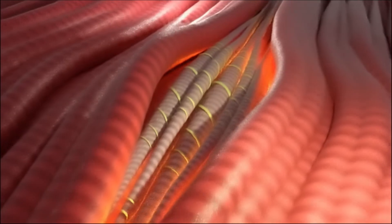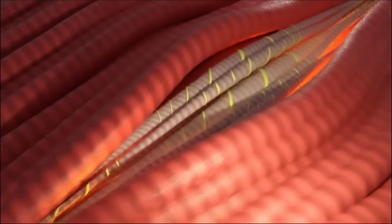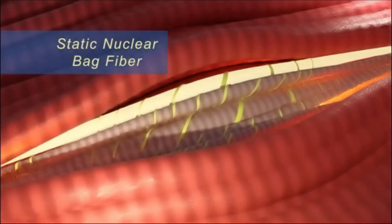Typical muscle spindles consist of three types of intrafusal muscle fibers surrounded by a connective tissue sheath. These include one dynamic nuclear bag fiber, one static nuclear bag fiber,